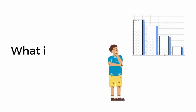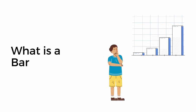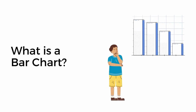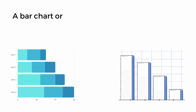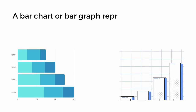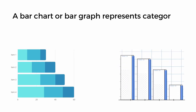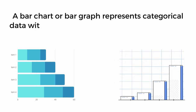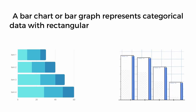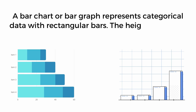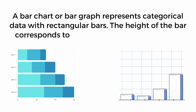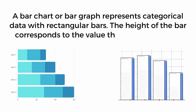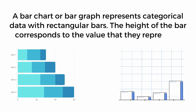So what is a bar chart? A bar chart or bar graph is a chart that represents categorical data with rectangle bars. The height or length of the bar corresponds to the value it represents, and the bars can be plotted horizontally or vertically.